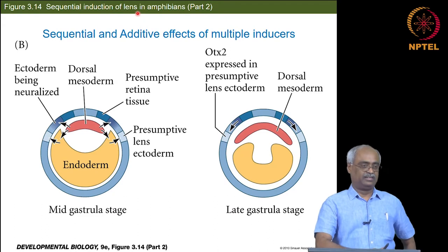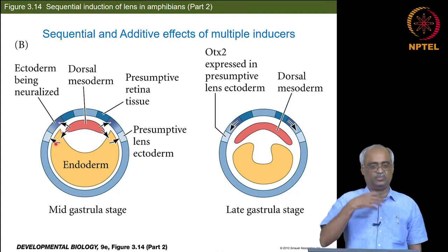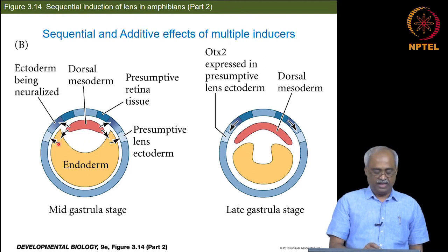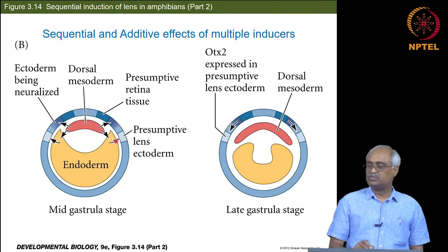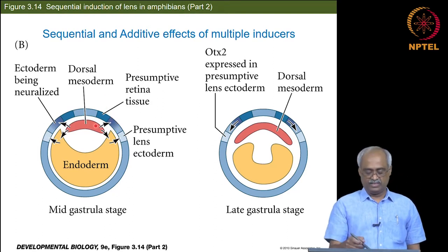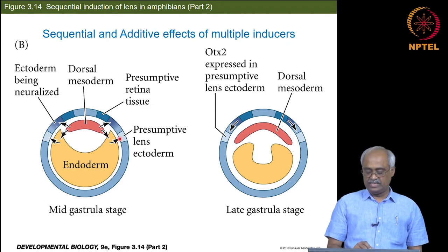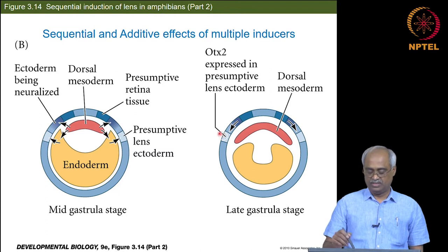This cross-section drawing of the head ectoderm shows that the foregut endoderm — which will form the upper part later — induces the ectoderm where the presumptive lens is going to form. We still do not know the specific signal responsible, but this tissue seems to be responsible. The adjacent ectoderm, which later forms the retina, gets induced by the dorsal mesoderm. These inductions lead to expression of a transcription factor in the part of the ectoderm that is going to form the lens.